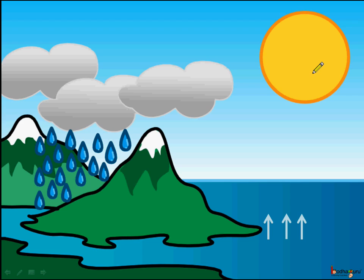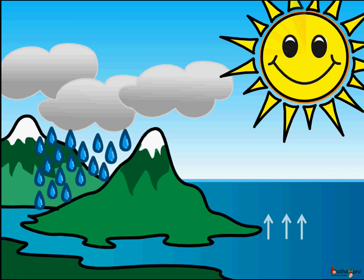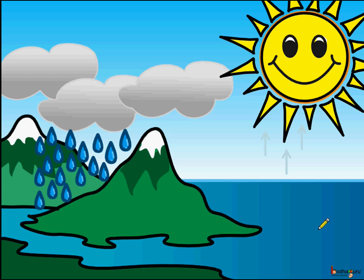Here is the sun. What does the sun do? The sun heats the water in all the water bodies — be it ponds, lakes, rivers, etc. The water changes into water vapor, and the water vapor rises in the air.